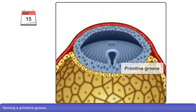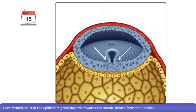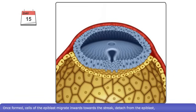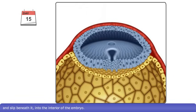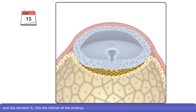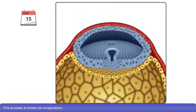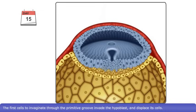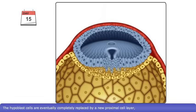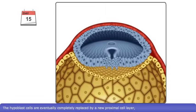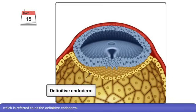Once formed, cells of the epiblast migrate inwards towards the streak, detach from the epiblast, and slip beneath it into the interior of the embryo. This process is known as invagination. The first cells to invaginate through the primitive groove invade the hypoblast and displace its cells. The hypoblast cells are eventually completely replaced by a new proximal cell layer, which is referred to as the definitive endoderm.